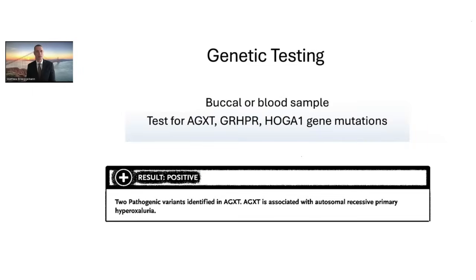Genetic testing is really the way to seal the diagnosis for primary hyperoxaluria. It can be performed via a buccal swab or a blood sample. You have options to test just the three known genes for primary hyperoxaluria, or more extended gene panels including other recurrent kidney stone disorders. In my clinic, the genetic testing result for this patient came back with two pathogenic variants in the AGXT gene — the gene associated with PH1 — allowing me to get the patient on appropriate life-altering treatment.